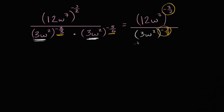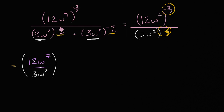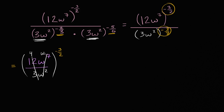Negative 2/3 plus negative 5/6 is negative 3/2. Now what's interesting is I have negative 3/2 in the numerator and negative 3/2 in the denominator. So we can do the same thing as the last problem — this simplifies to 12w to the 7th over 3w squared, all to the negative 3/2 power. 12 divided by 3 is 4, and w to the 7th divided by w squared is w to the 5th. So we get 4w to the 5th to the negative 3/2 power.